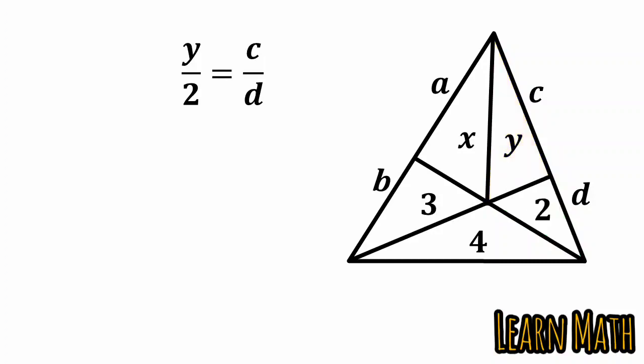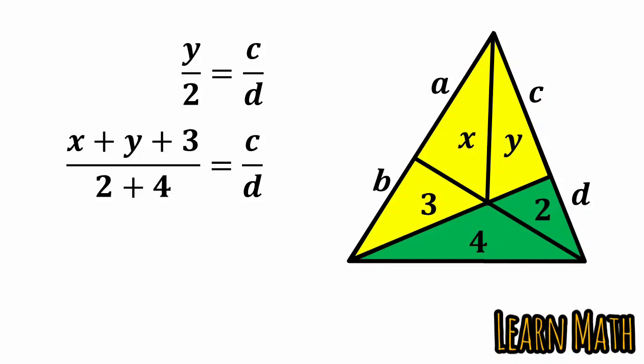And similarly, again, this green triangle and this yellow triangle—the height is the same. So we can write 3 plus x plus y divided by 2 plus 4 is equal to c by d.